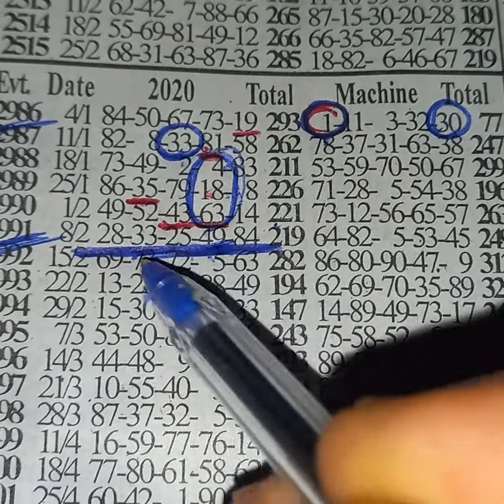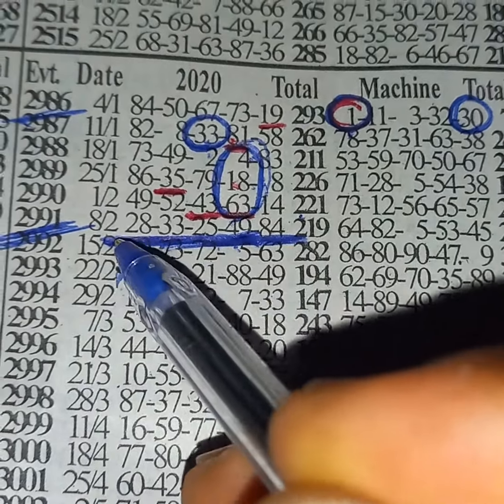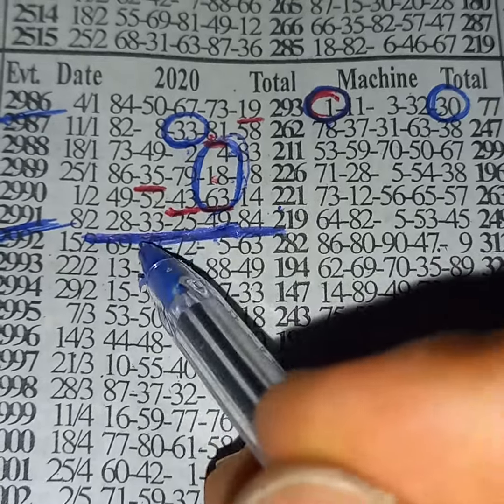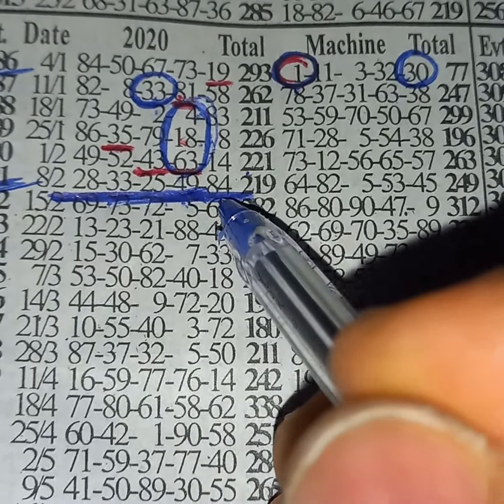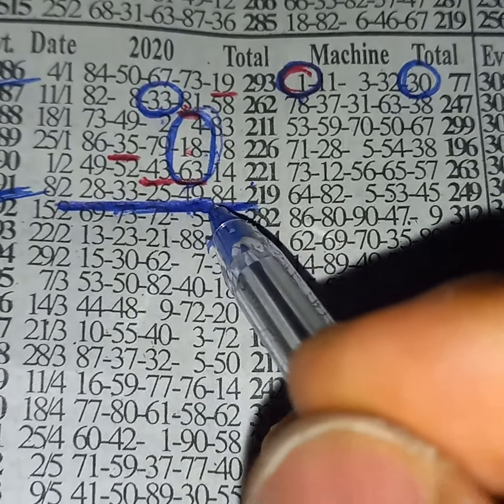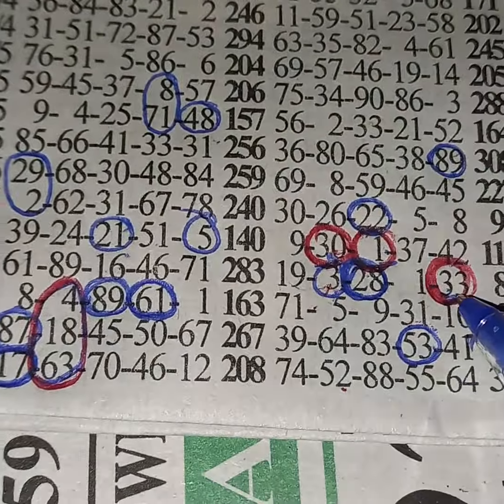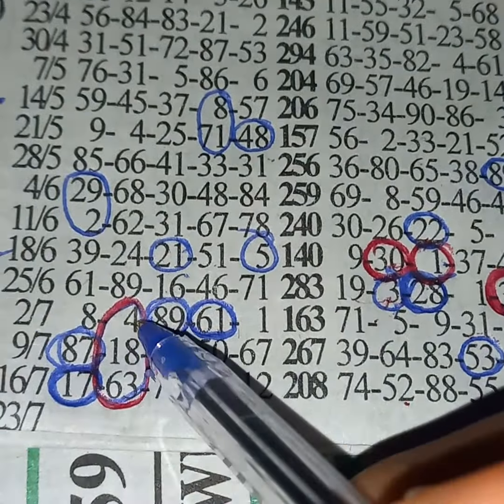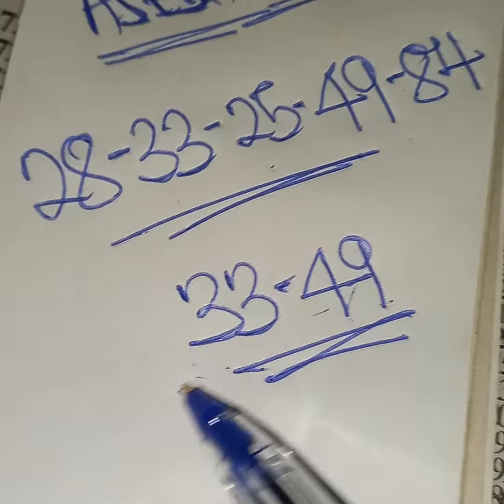This 33 will jump and this single 4 counter to 49, giving us 33-49 as to show, and we'll play this event: 28, 33, 25, 49, 84. This is what I wanted to bring.